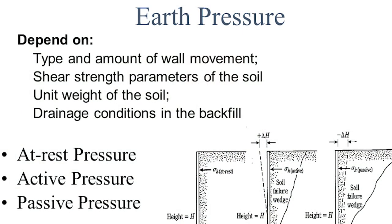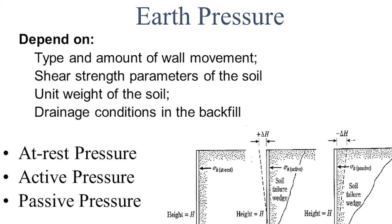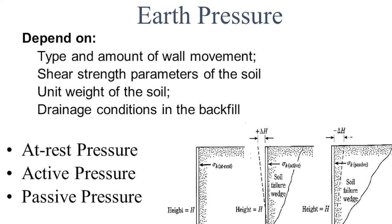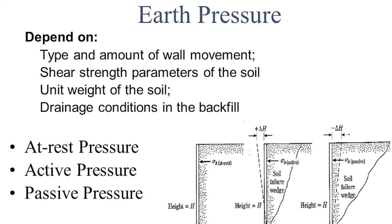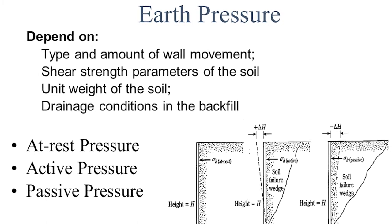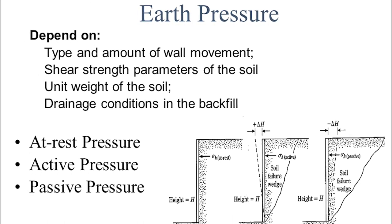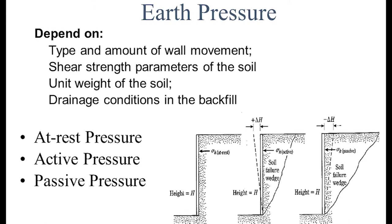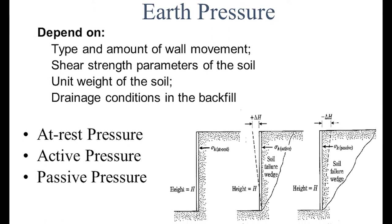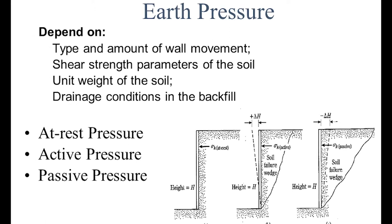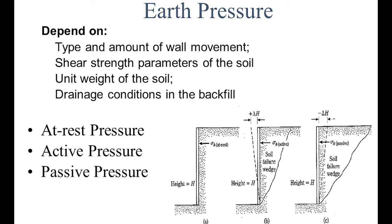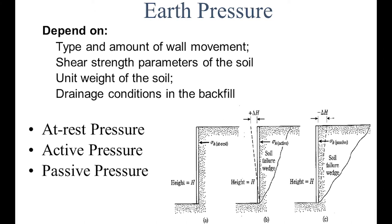Earth pressure depends on: the type of wall, movement type and amount of wall movement, shear strength parameters of the soil, unit weight of the soil, and drainage conditions in the backfill. These variables govern all three conditions — at rest, active pressure, and passive pressure.